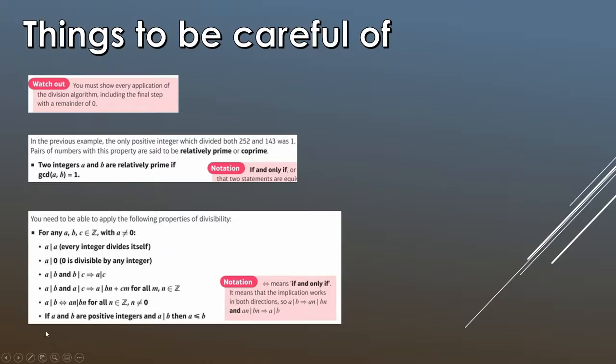Again, so some more formulas here. Well not formulas but definitions of our properties of divisibility. And if A and B are positive integers and A divides B, then A must be less than or equal to B. A cannot be bigger than B, otherwise it will not divide B.